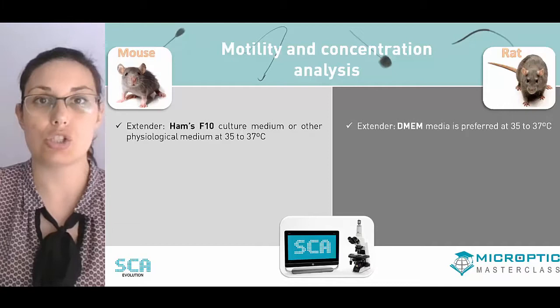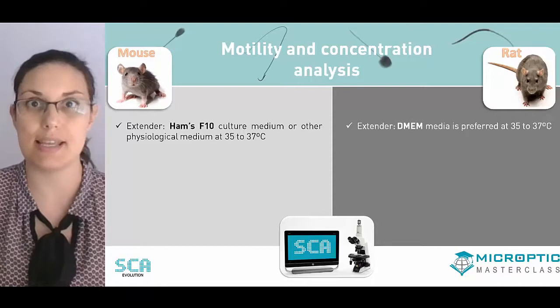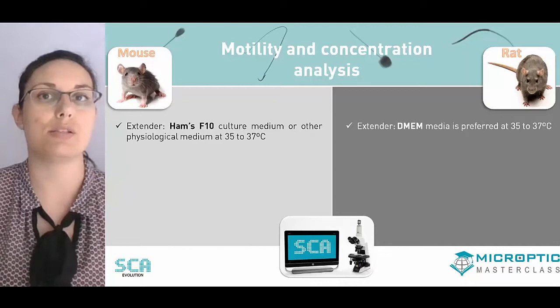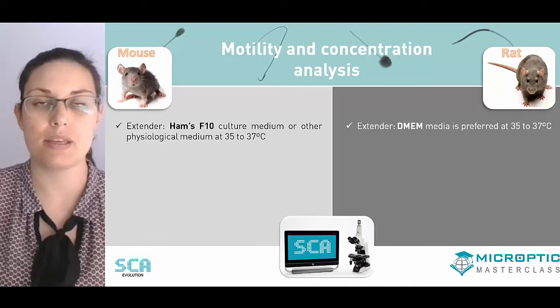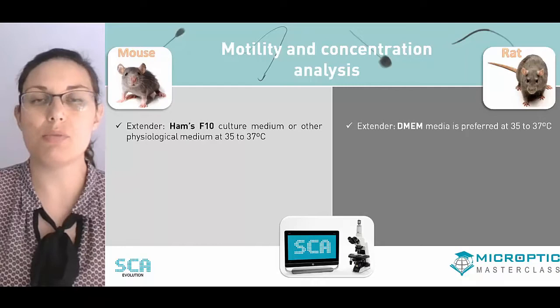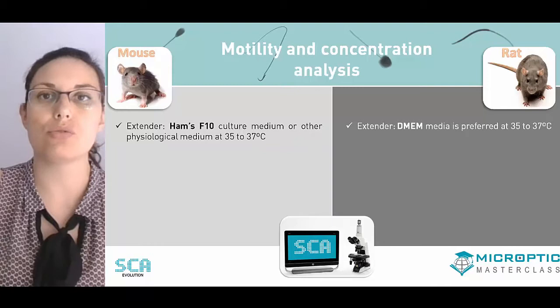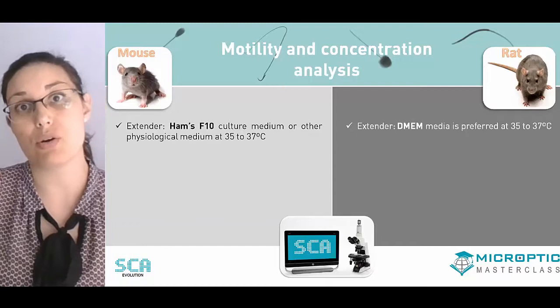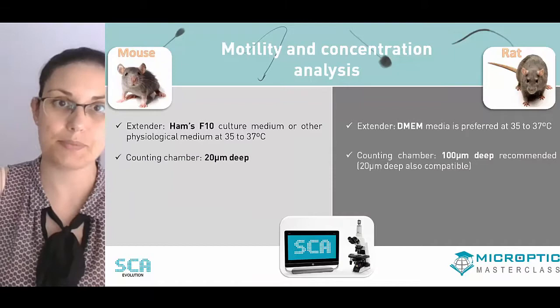In the case of house mouse, it is recommended to use a nutritive HAMS media — HAMS F10 — pre-warmed at 35 to 37 degrees, to guarantee that sperm features are similar to those found inside the female tract and ensure good motility of these sperm cells. Conversely, for rat, it is more recommended to use D-MEM media, which is an Eagle's modified medium that is also nutritive and guarantees good motility for that animal species. It is also recommended to perform the test at 35 to 37 degrees.